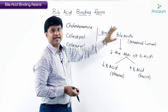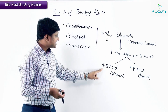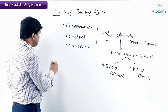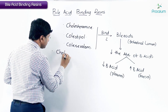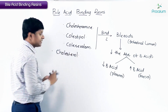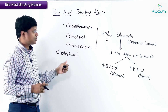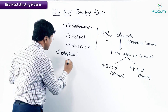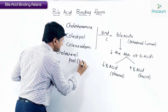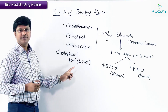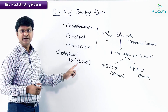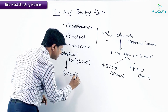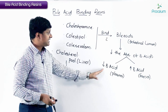Now, the bile acid content in the plasma is reduced. Where are these bile acids synthesized from? Bile acids are synthesized from cholesterol. So once the bile acid content in the plasma is reduced, whatever cholesterol pool is present within the liver is being converted into bile acids.